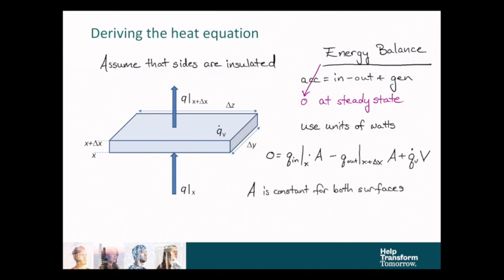We see for this particular problem, A is constant for both of those surfaces. And it's basically just delta y multiplied by delta z. Similarly, the volume of the slab is delta x, delta y, delta z.